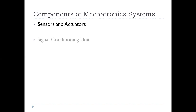The next unit is the signal conditioning unit. The signal conditioning unit receives the signal from the sensor and converts it into a suitable form so that the controller — the next component of the system — can understand the signal. Examples of signal conditioning units include an amplifier, an analog to digital converter, a digital to analog converter, and similar devices.